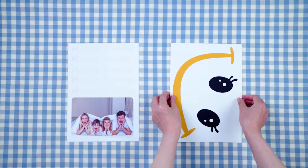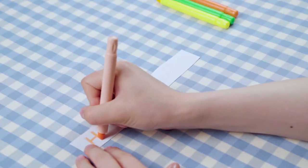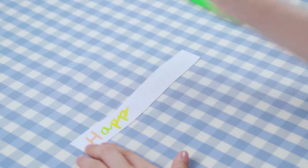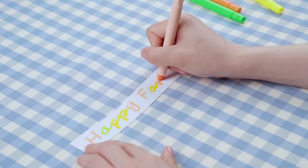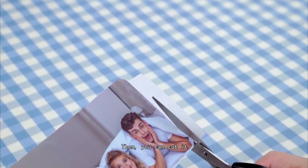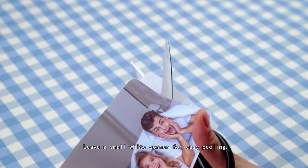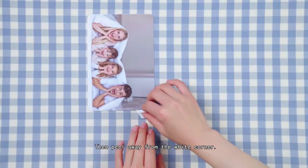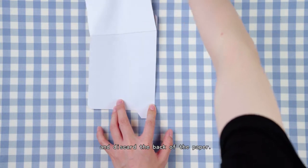After the image dries up, use scissors to cut off the extra white part of the paper. Leave a small white corner for easy peeling. Then peel away from the white corner. Retain the pattern side and discard the back of the paper.